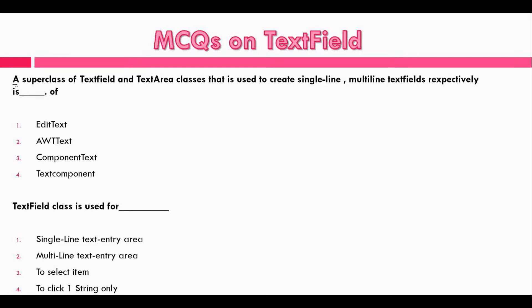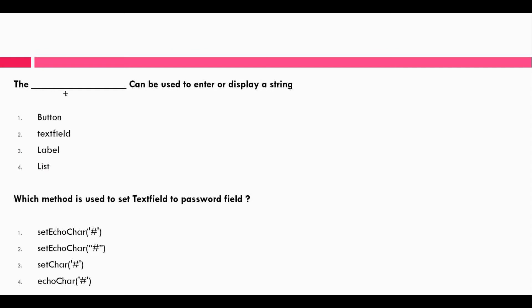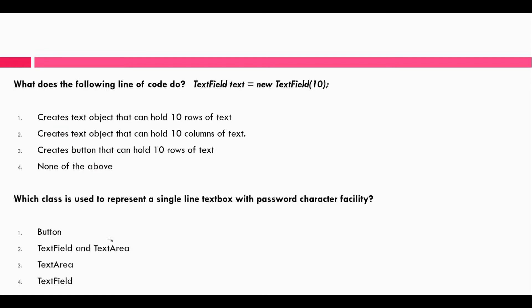The first question: what is the superclass of TextField and TextArea, which are used to create single-line and multi-line text fields respectively? The answer is TextComponent class. The second question: TextField class is used for? The answer is a single-line text entry area. Next question: what can be used to enter and display a stream? The answer is TextField. Next question: which method is used to set a TextField as a password field? The answer is setEchoChar() with one character parameter.